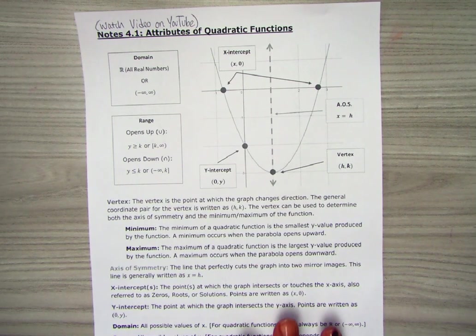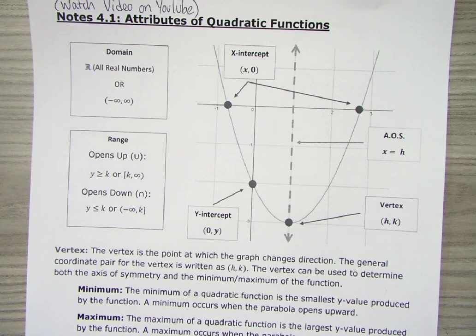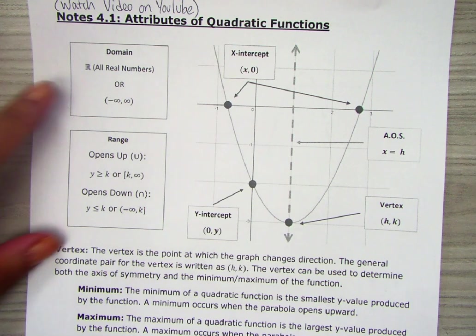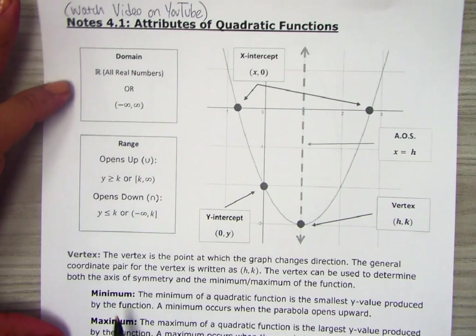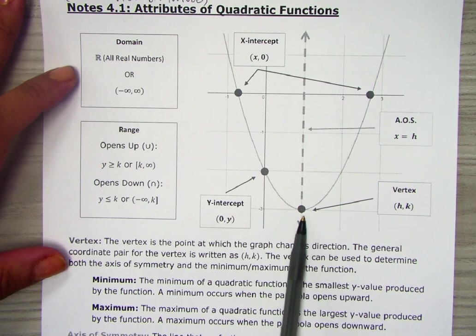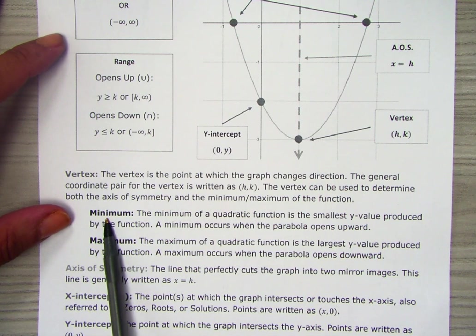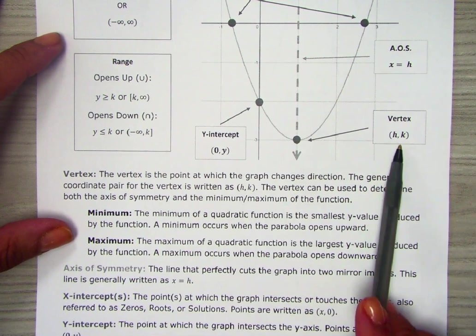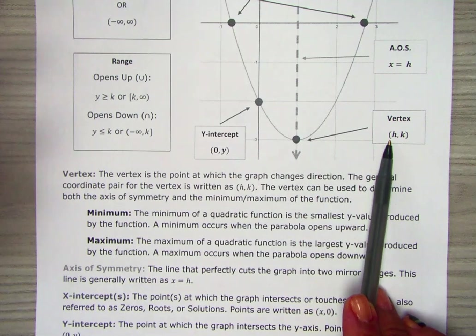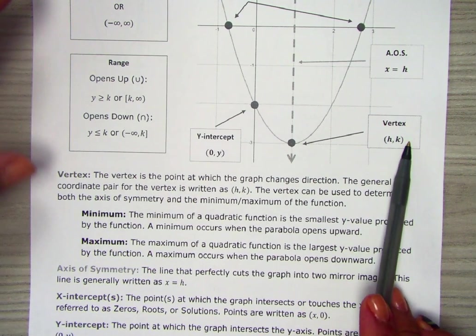The first part of unit 4 is just reviewing the attributes of quadratic functions again, and we kind of reviewed these last unit with absolute value functions. So very similar — we have a vertex in the parabola. You have to identify it as a minimum or maximum value, and the vertex is labeled as two variables x and y, so we identify them as h and k.